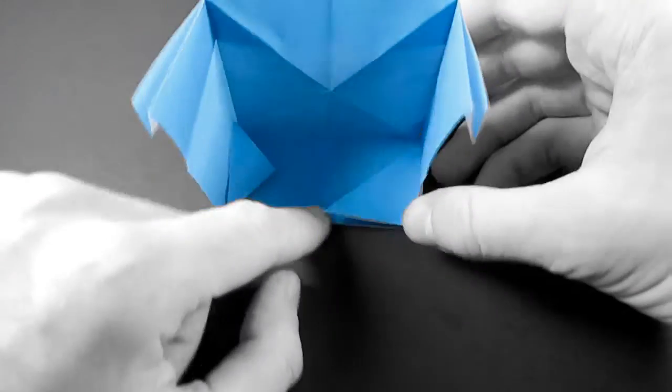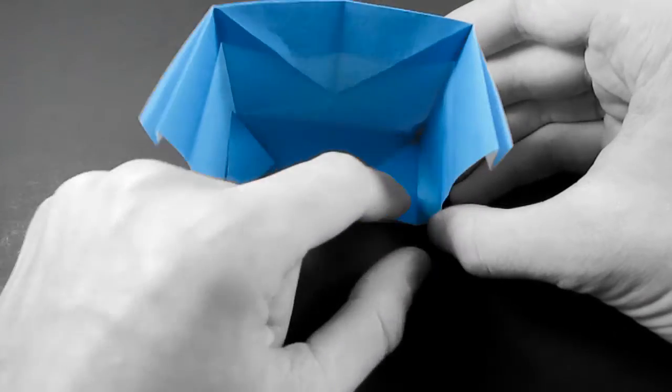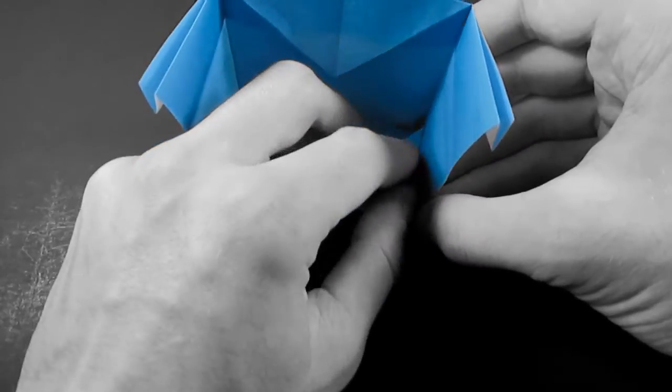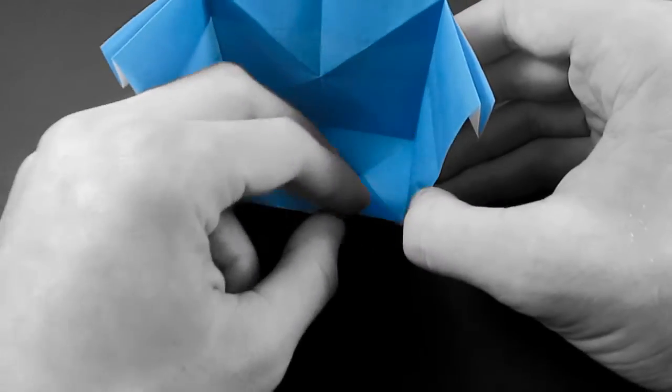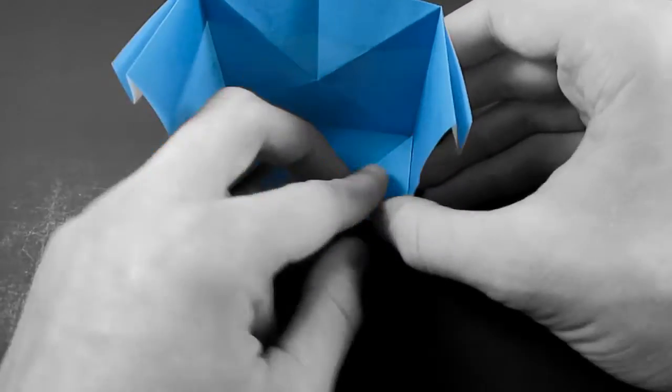Like this. So all we did was we took this bottom edge here and folded it up to the existing crease. Like this. So we just folded it up, and that takes care of that.